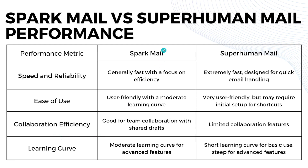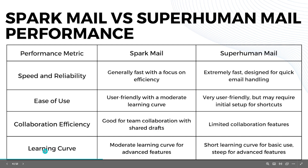For collaboration efficiency, Sparkmail is good for team collaboration with shared drafts, while Superhuman Email has limited collaboration features. For learning curve, Sparkmail has a moderate learning curve for advanced features, while Superhuman Email has a short learning curve for basic use and a low-steep learning curve for advanced features.